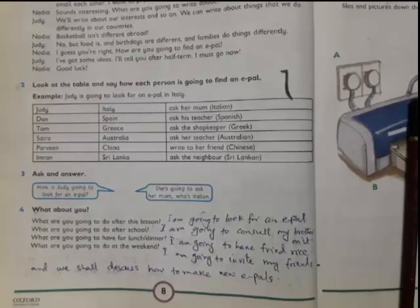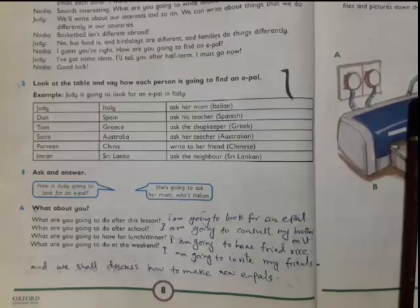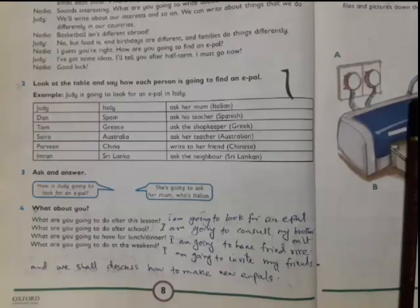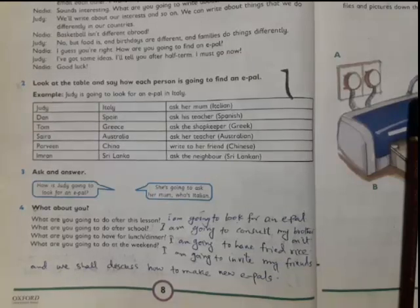What are you going to have for lunch or dinner? I'm going to have fried rice. You can also write and think of your choices. What are you going to do at the weekend? I am going to invite my friends and we shall discuss how to make new e-pals. Move to next page.